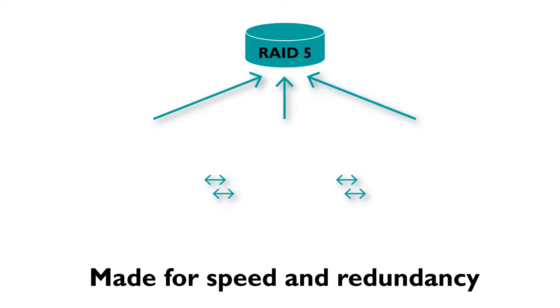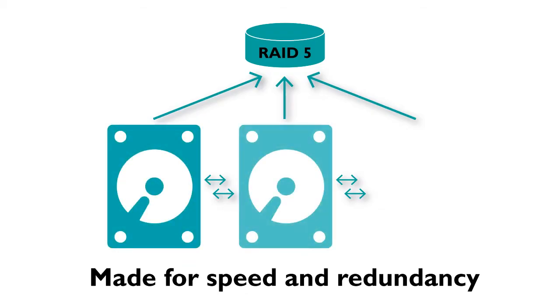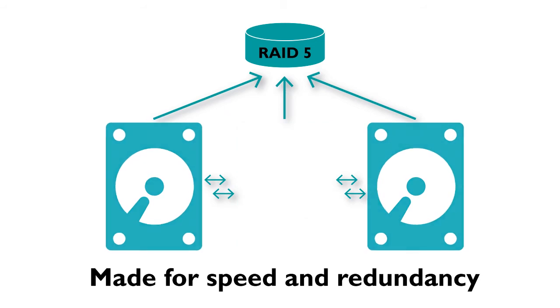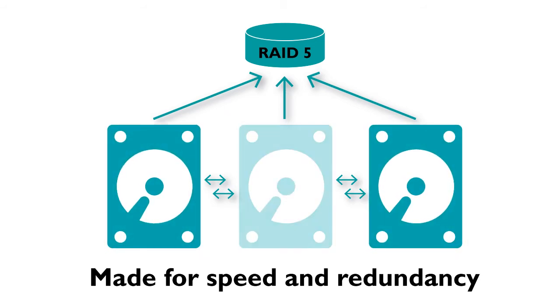RAID 5 uses Striping with parity across disks. To use RAID 5, you will need at least three mass storage drives. RAID 5 writes data across the drives in the array. If one drive fails, it can be rebuilt using the data on the other drives. In RAID 5, part of the storage capacity of the array is utilized for redundancy.